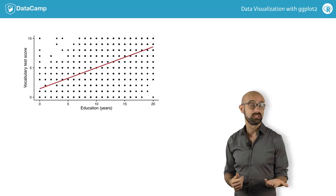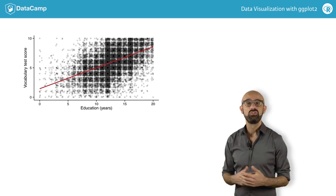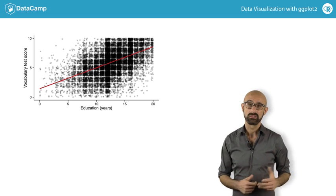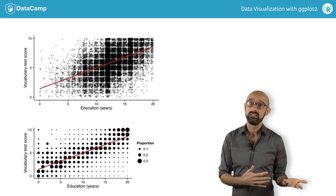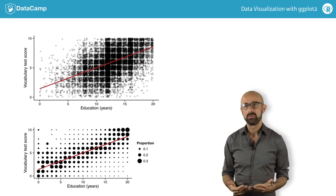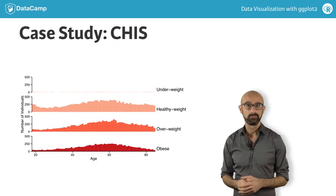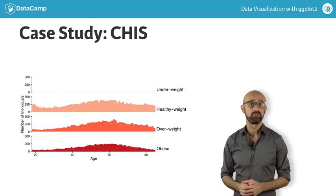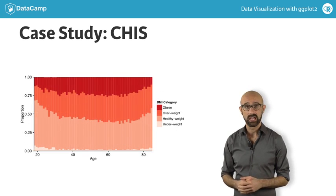We'll also use a variety of datasets built into R, such as the vocab data frame in the car package, to understand common pitfalls and best practices, such as what is the best plot type for accurately representing the nature of our data. Once we have a solid understanding of these concepts, we're going to go through a case study using the California Health Interview Survey. These are some examples of the plots we'll make at the end of the second course using this population health data.